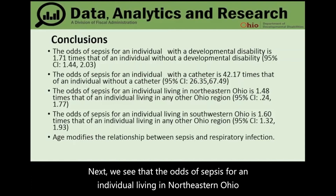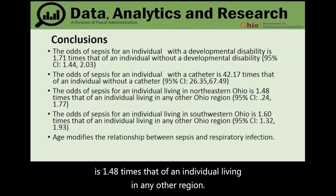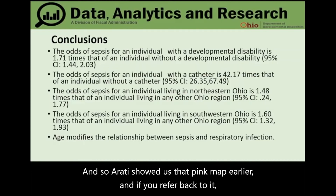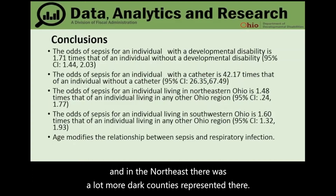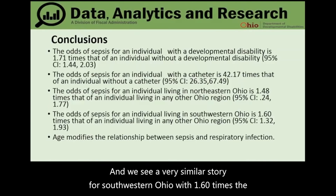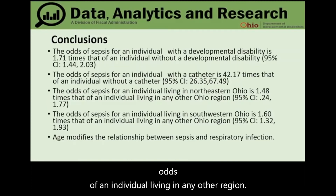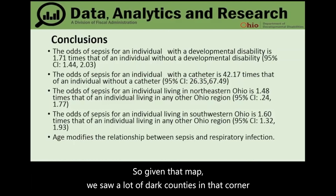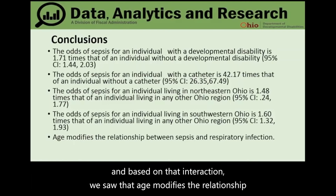The odds of sepsis for an individual living in northeastern Ohio is 1.48 times that of an individual living in any other region, consistent with the earlier map showing darker counties in the northeast. Similarly, for southwestern Ohio the odds are 1.6 times that of any other region, also consistent with dark counties visible in that corner of the map.